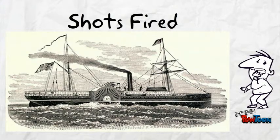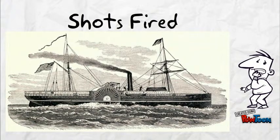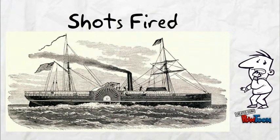Shots fired. January the 9th, 1861. Shots were fired at daybreak at the steamship Star of the West. The 250 United States troops on board were attempting to enter the harbor of Charleston for the purpose of communicating with Fort Sumter.